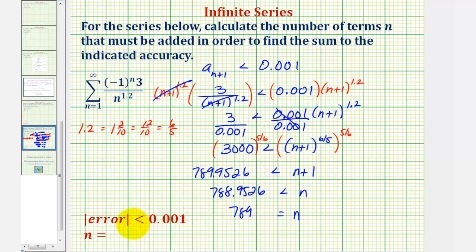So in order for the error to be less than 0.001, we must find the sum of the first 789 terms of the infinite series. I hope you found this helpful.